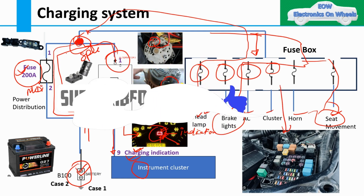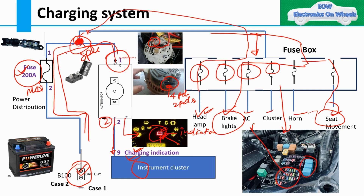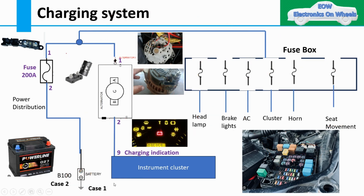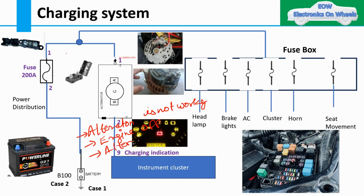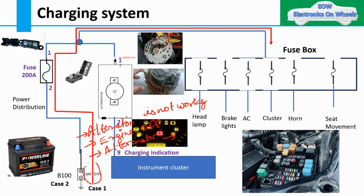In the fuse box you have fuses, relays, midi fuses, maxi fuses, and mega fuses. Case one: when your alternator is not working — either your engine is off or the alternator itself has failed. In that condition, all supplies will come from the battery. You can see I have drawn a line showing the path current follows from the battery to the fuse box and then to the loads. This is case number one.